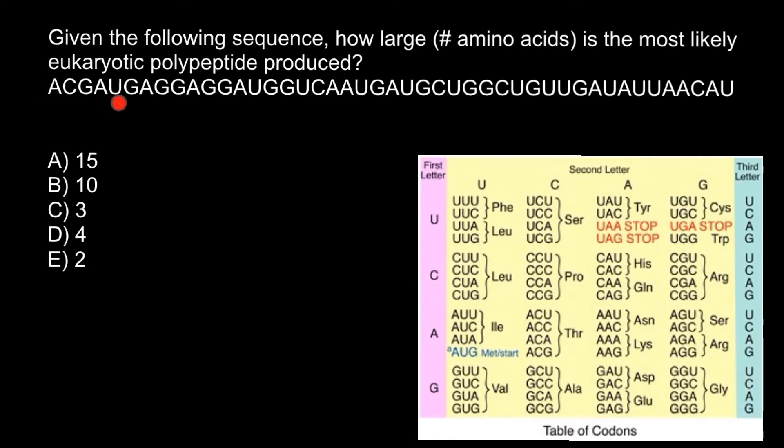...so this is going to be our first codon. Then we need to find one of these three codons. Any of these would make an interruption in polypeptide production. So these are stop codons, and stop codons don't code for any amino acid. These stop codons have to be in the same reading frame.